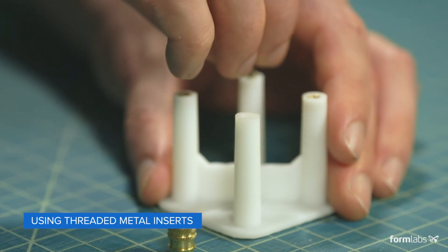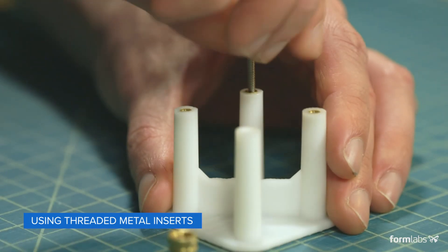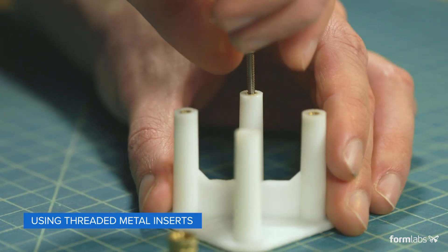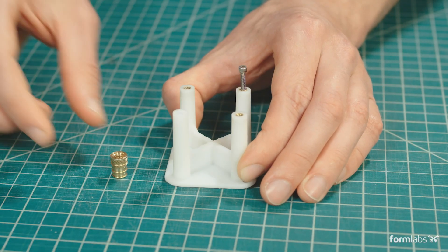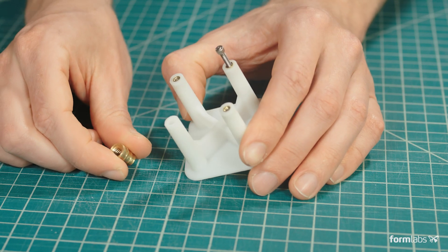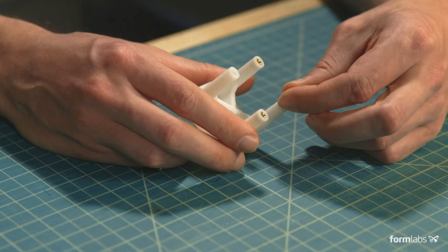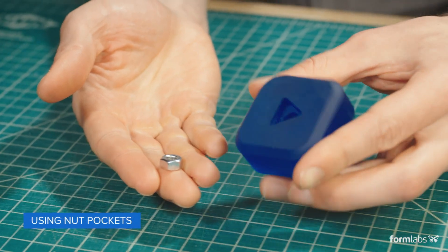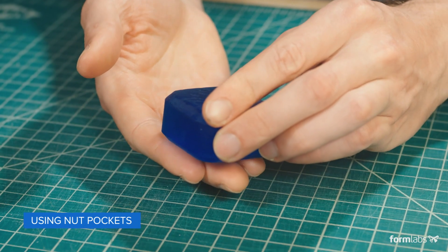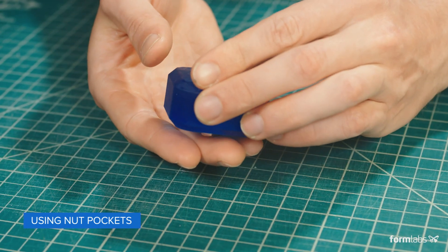Another option, if you need smaller thread sizes or you expect to be assembling and disassembling the part frequently, is to combine the printed plastic materials with metal hardware. There are a few popular methods for using metal hardware with printed plastics, such as threaded inserts and nut pockets. The printed part is designed to capture the metal component and prevent it from rotating while fasteners are being installed or removed.